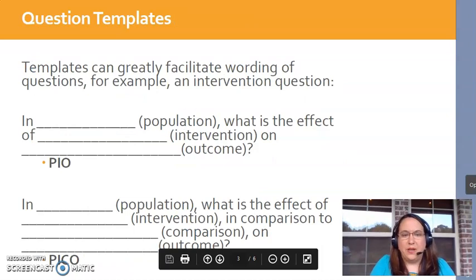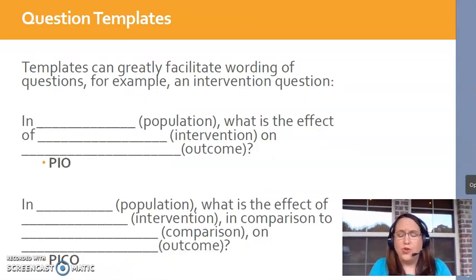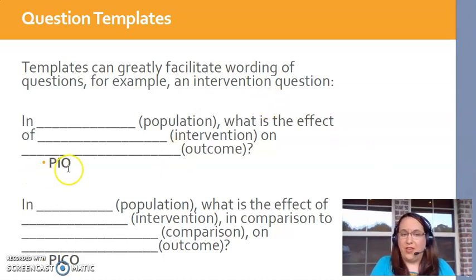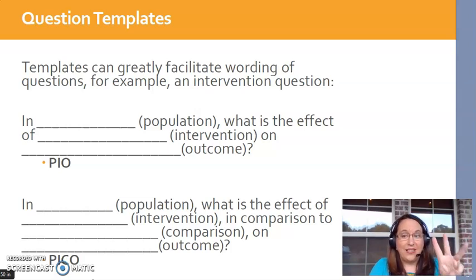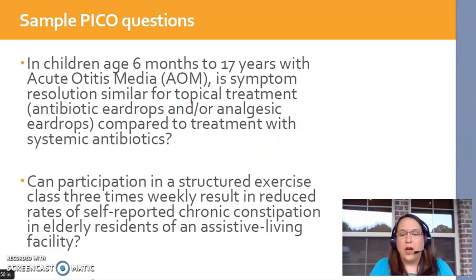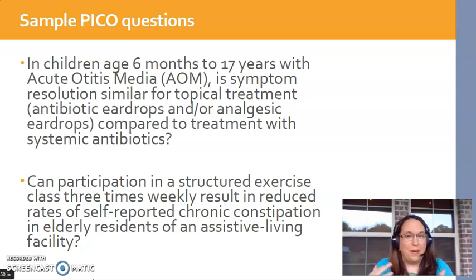Here are a couple of templates for what your question could look like, but you don't have to follow these verbatim. The PO format doesn't have a comparator, while the PICO format does — that's really the only difference. Your question must have at least three things: population, intervention, and outcome. It's up to you whether you add a comparator. The main thing is that a well-written question allows you to pick out each individual component clearly.